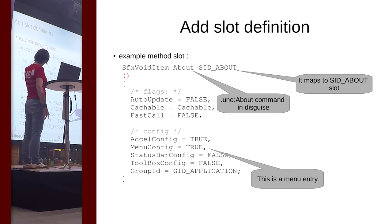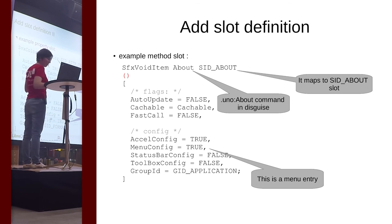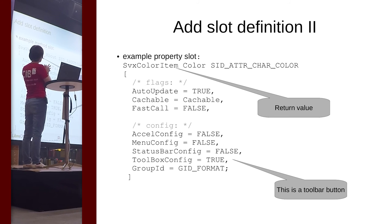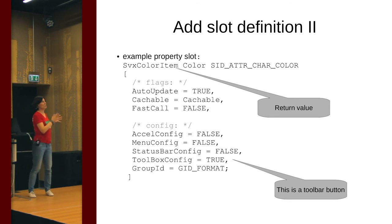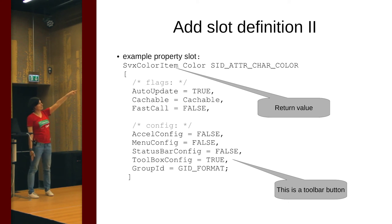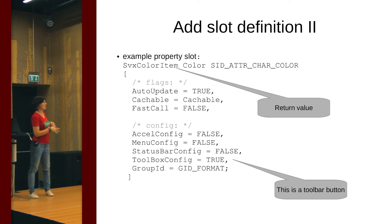What's interesting are the configuration flags. For example, you have to set toolbox config to true if this is going to be a toolbar button. This other example is a method slot, which does not change state but does some other work — usually it opens a dialog. The basic difference between property slots and method slots is the return type declaration. This particular slot maps a UNO colon About command to the SID underscore About slot, and since menu config is set to true and everything else is false, this is a menu entry.